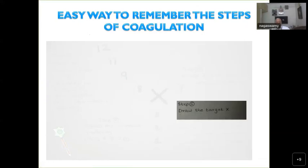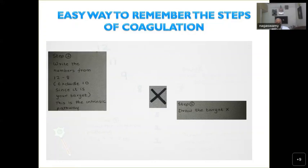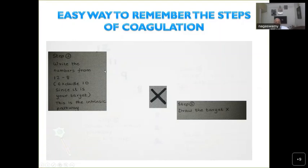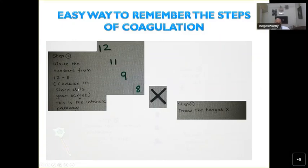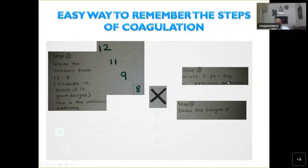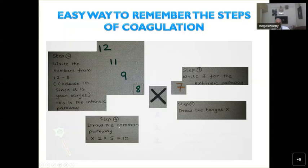An easy way to remember the classic pathway: first, mark the target — factor 10 — with an X. Second, write the numbers from 12 to 8, excluding 10: so 12, 11, 9, and 8. Third, write factor 7, the extrinsic pathway factor. Fourth, draw the common pathway — factor 1 (fibrinogen), 2 (prothrombin), and 5, all leading to factor 10 — that is the final common pathway.